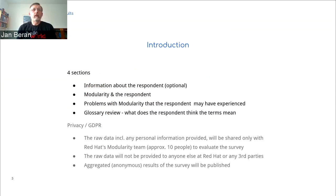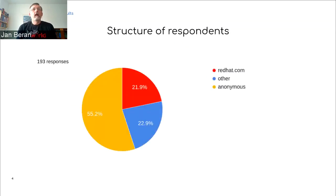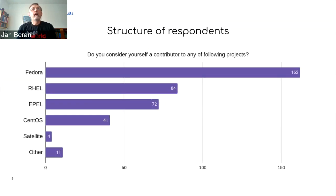There were four sections. There were also some privacy considerations — we do not share any individual data, just statistics, with data accessible only to a limited number of people to prepare the evaluation. Regarding the structure of respondents, 22% were from Red Hat.com, approximately the same number from others, and more than half were anonymous. Most people were Fedora contributors — 162 — with some RHEL contributors and combinations.